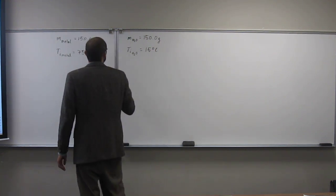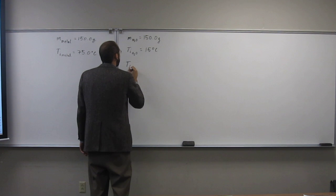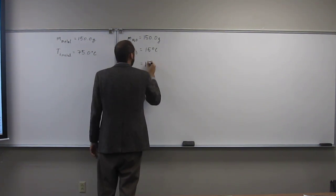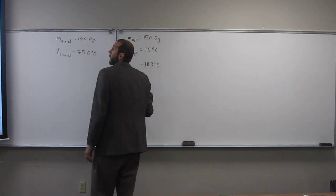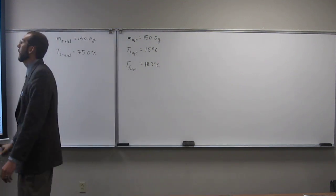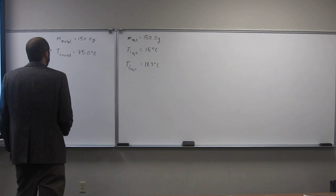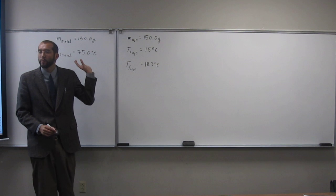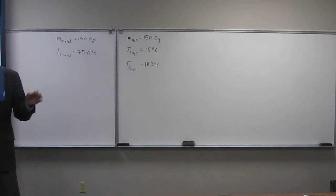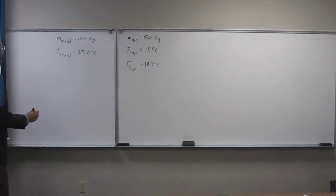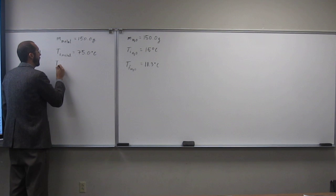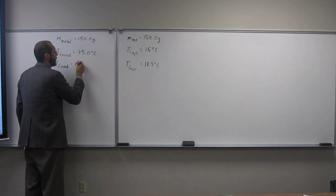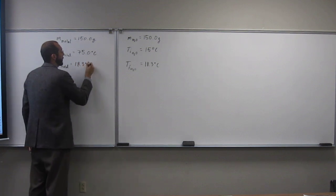So the temperature of the water rises, so they say the final temperature to 18.3 degrees Celsius when the metal is put in there. So they want you to calculate the specific heat capacity. What you have to realize is the temperature of the metal and the temperature of the water are going to be the same temperature when you're at equilibrium. So Tf of the metal is also going to be 18.3 degrees Celsius.